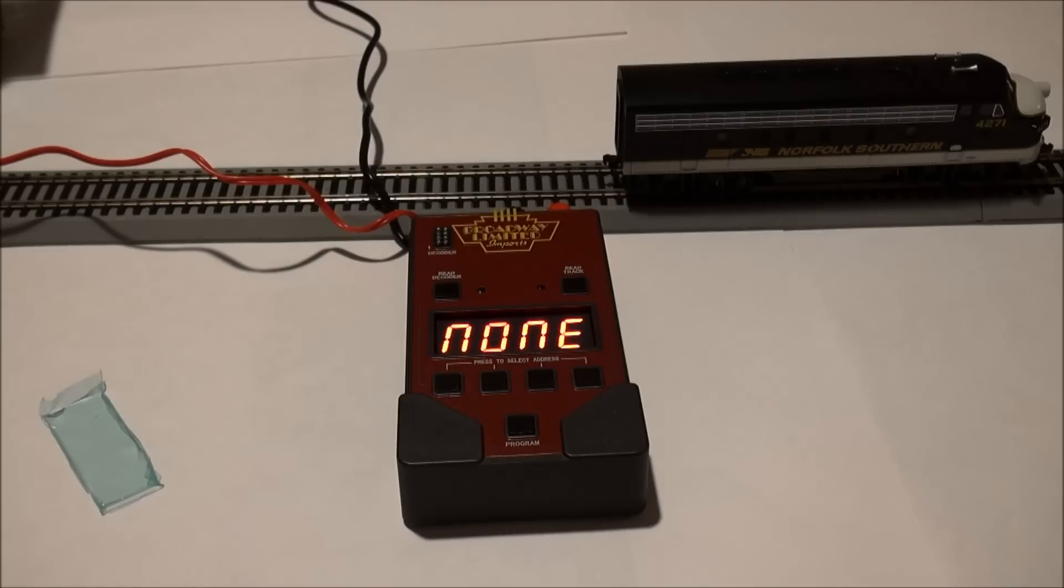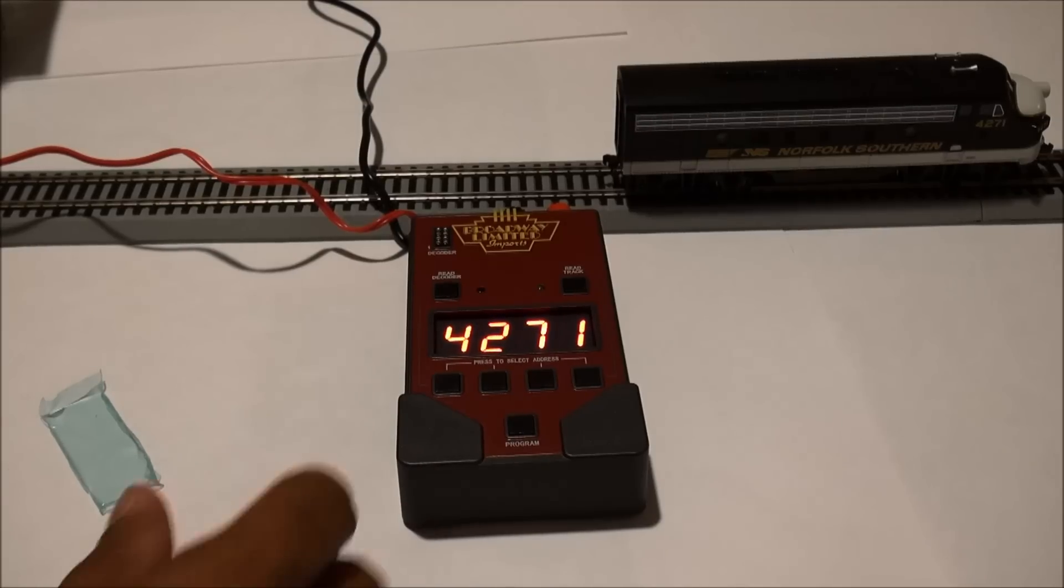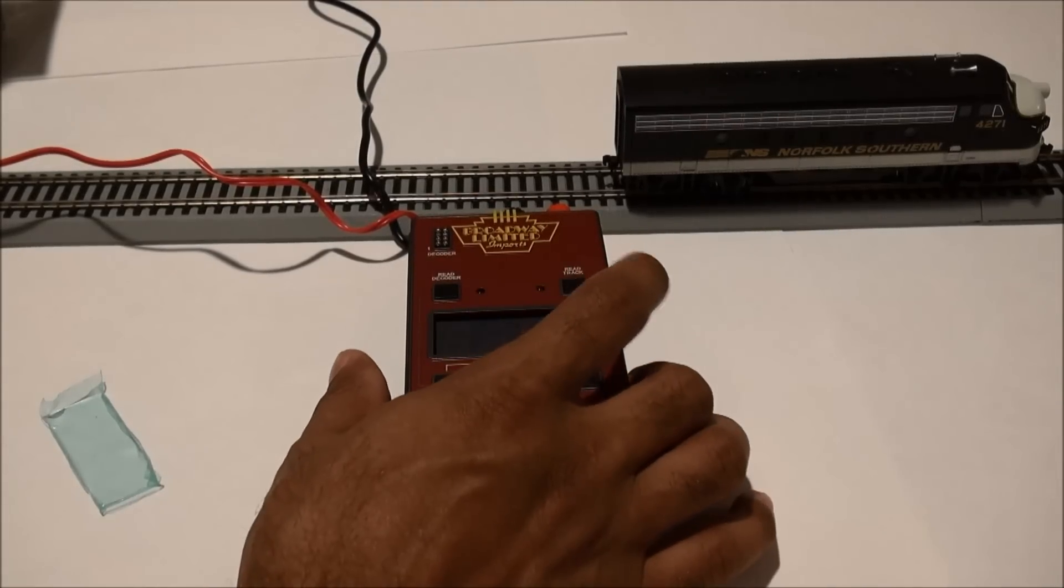Okay, now it says 4271. Now honestly you want to check this by checking your road number. I will go ahead and check this off camera in the essence of time, and if there's a problem I'll report it back to you.